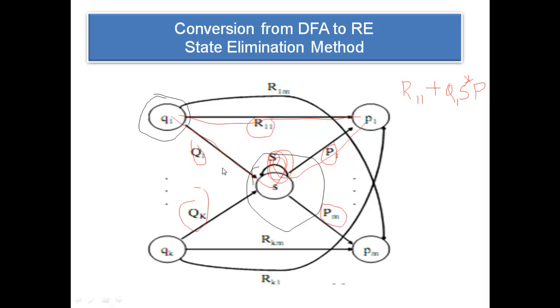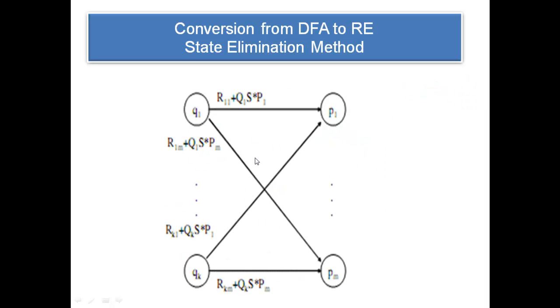If R11 is not available, this is the only possible way. If you are trying to eliminate S, you should have to list out all the possible items on the edges. This is the resultant diagram we have. After eliminating S from Q1 to Q1, this is the regular expression. Similarly, from Q1 to PM, this is the regular expression. Everywhere you have to write like this.